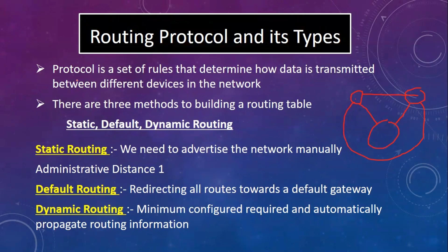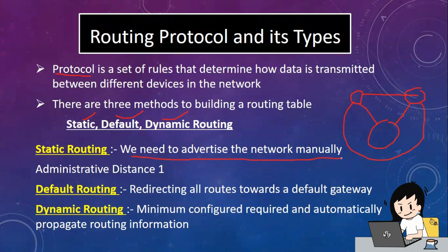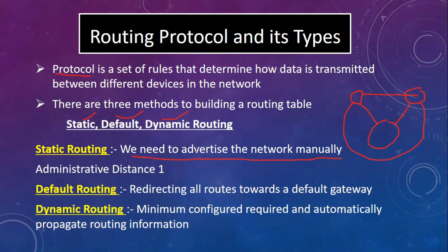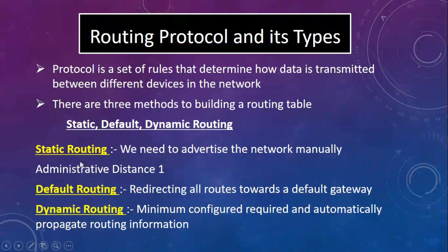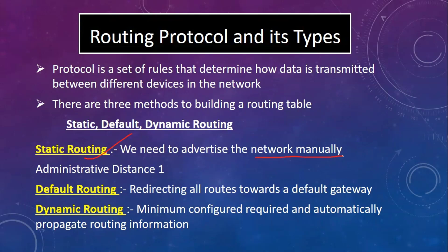The 0.0.0.0 address is used in dynamic routing. We can use static, default, and dynamic routing — each with its own benefits and drawbacks. Static routing is configured manually by the network administrator. It is a simple idea to configure all devices, but the drawback is that if we have 10 or 20 devices it becomes a large setup.